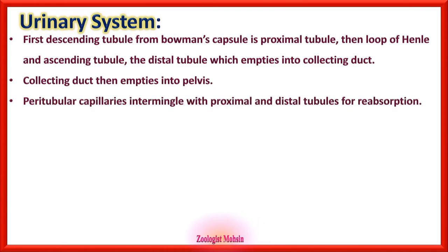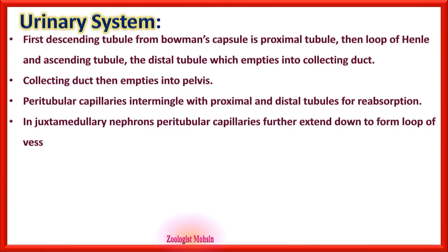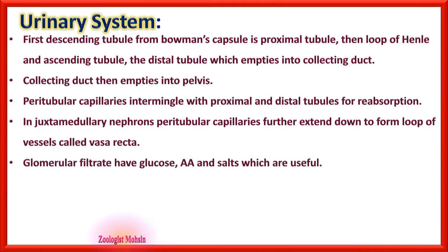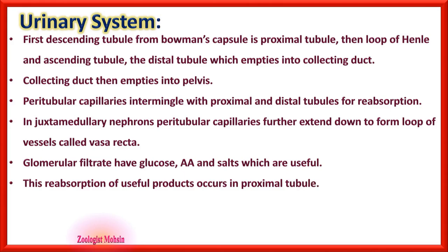Peritubular capillaries intermingle with proximal and distal tubules for reabsorption. In juxtamedullary nephrons, peritubular capillaries extend further down to form a loop of vessels called the vasa recta — present only in juxtamedullary nephrons, not in cortical nephrons. Glomerular filtrate contains glucose, amino acids, and salts which must be reabsorbed, and this reabsorption of useful products occurs mainly in the proximal tubule.